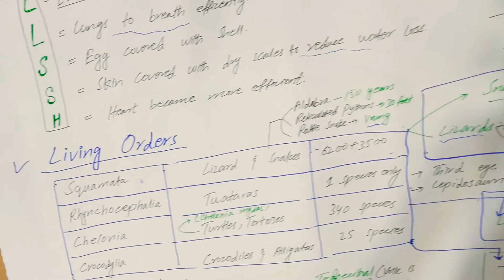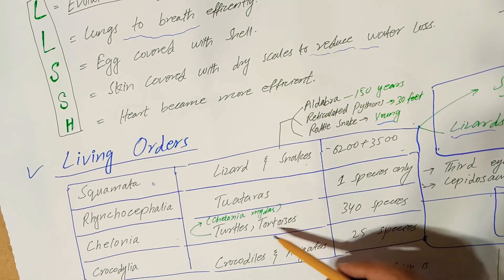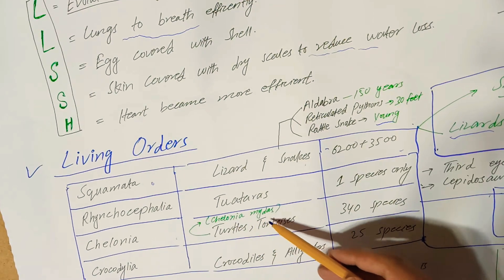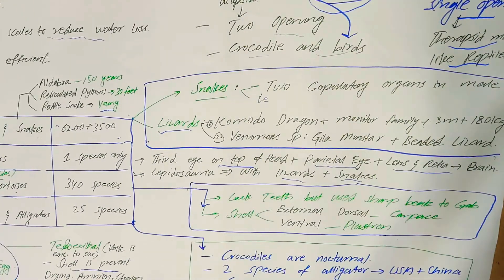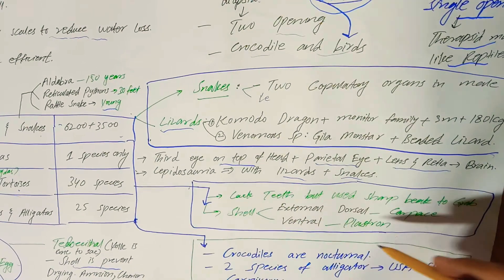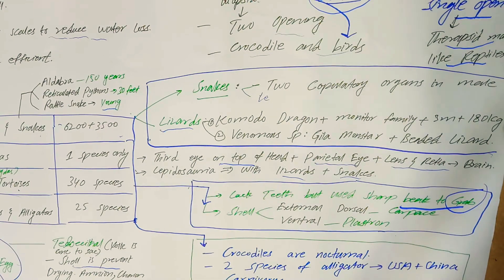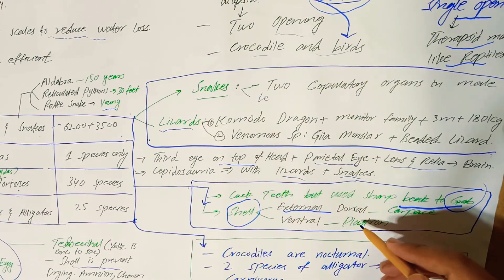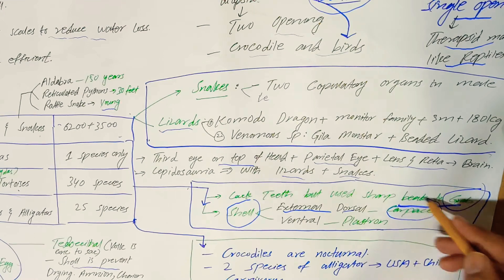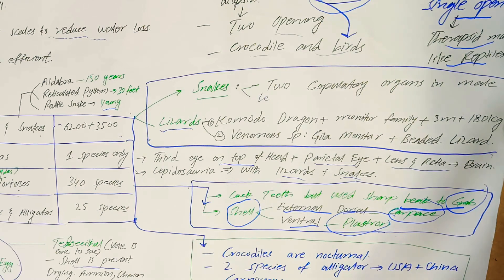Order Chelonia includes turtles and tortoises. The largest turtle is Chelonia mydas, and this order contains three photo-species. Turtles and tortoises have no teeth; instead they use their sharp beak to grab and crush prey. Their shell has two parts: the dorsal shell called the carapace, and the ventral shell called the plastron.